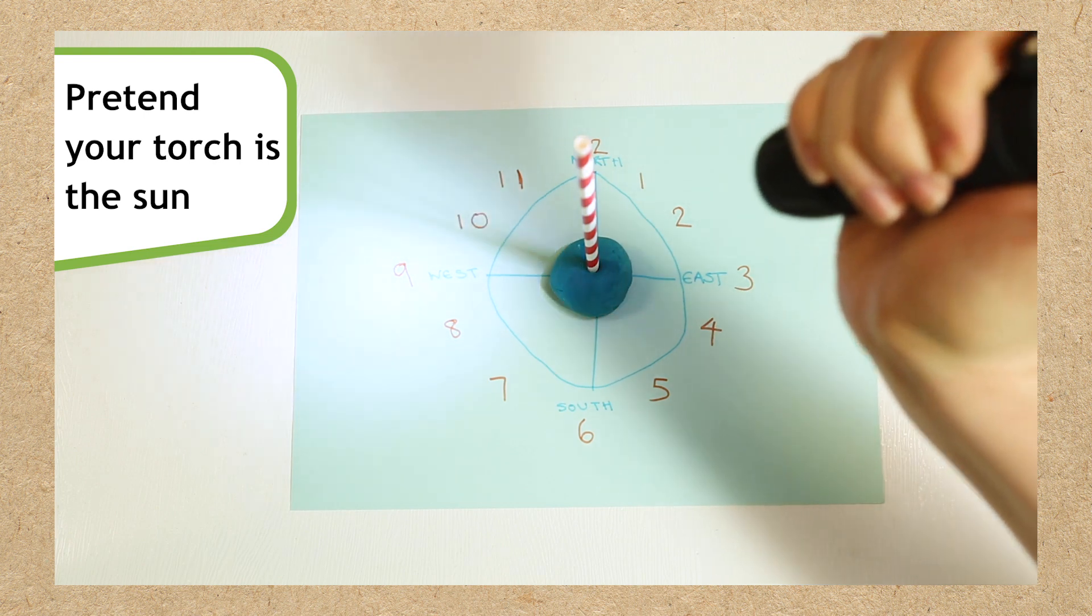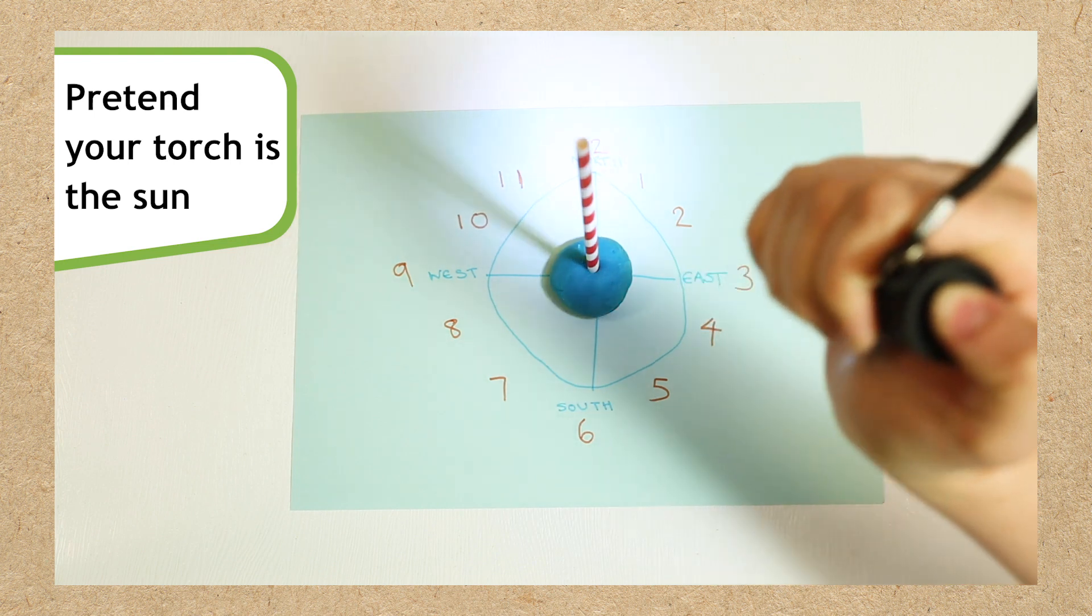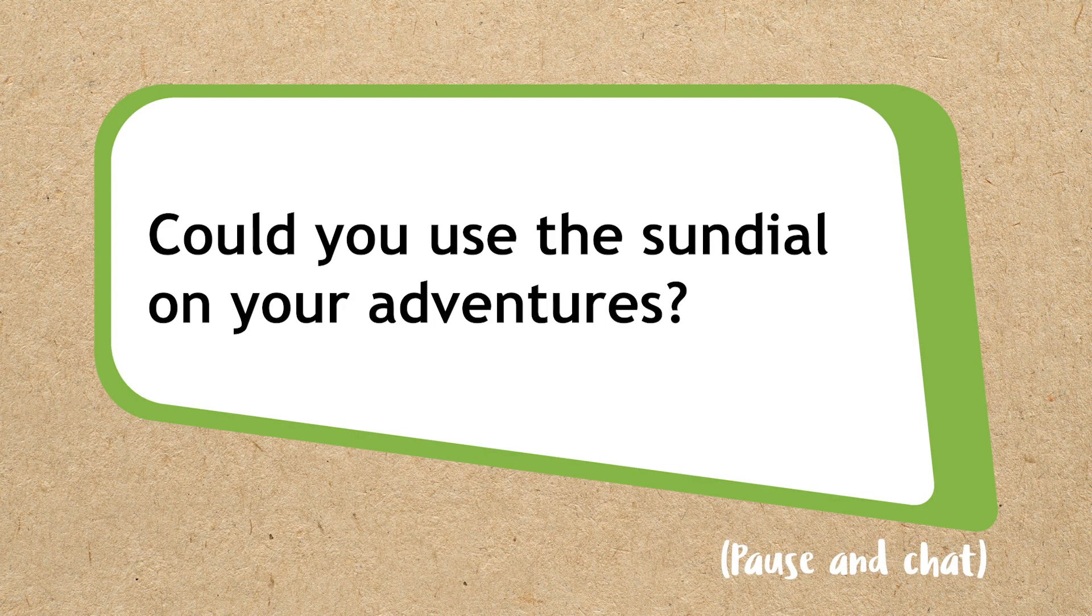Pretend the torch is the sun and move it around your sundial to watch how the shadow of the straw changes. Could you use this sundial on your adventures?